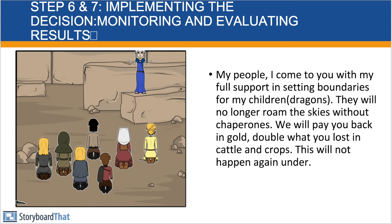Once she leaves and has implemented her decision, she has to engage in the final step of the rational decision-making model, which is to evaluate her results and monitor them. She gets up in front of her people and says, 'Hey guys, I heard your issues that you have brought forth to me, and I have decided to put my dragons up. The dragons will no longer be flying the skies, eating up all your stuff and making life horrible for you.' They cheer and clap. She then decides to compensate everyone who has been affected by the dragons, paying them double in gold for the losses of their resources. People are overjoyed, and her support continues to increase.